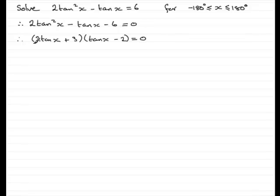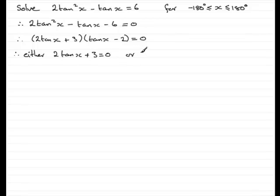This means we can set each factor equal to zero. So either 2tan x plus 3 equals 0, or tan x minus 2 equals 0. We'll deal with each one separately.